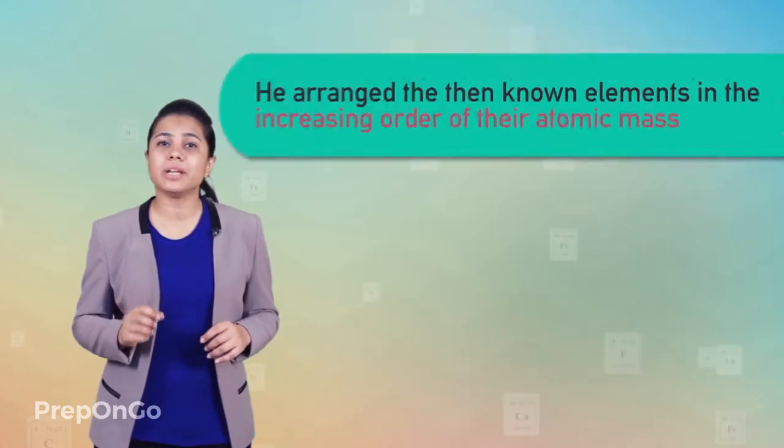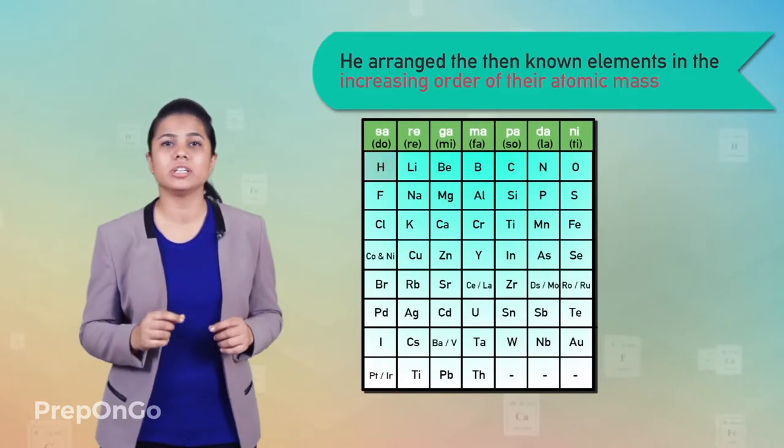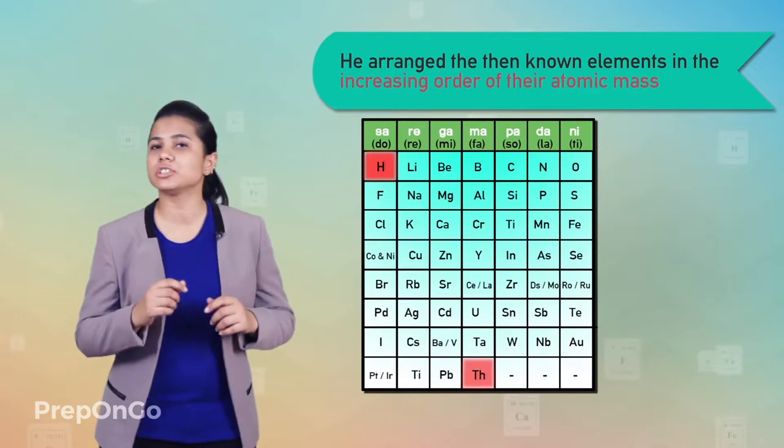He started with the element having lower atomic mass, which was hydrogen, and ended at thorium, which was the last element.